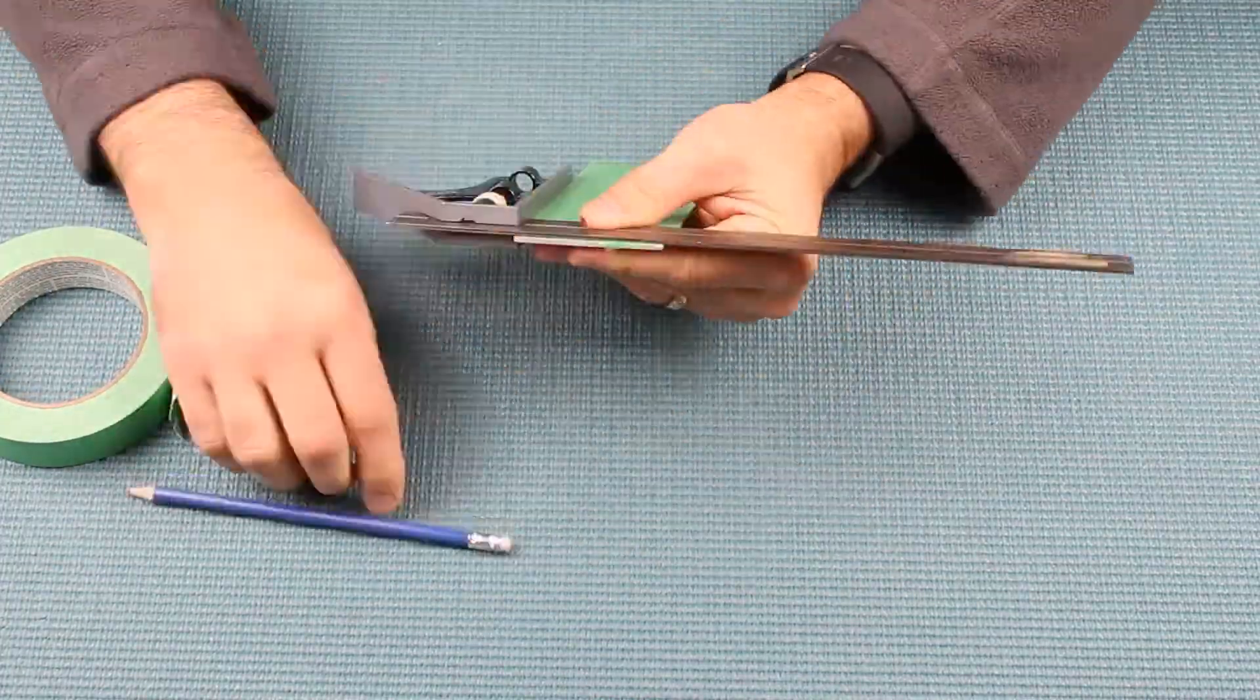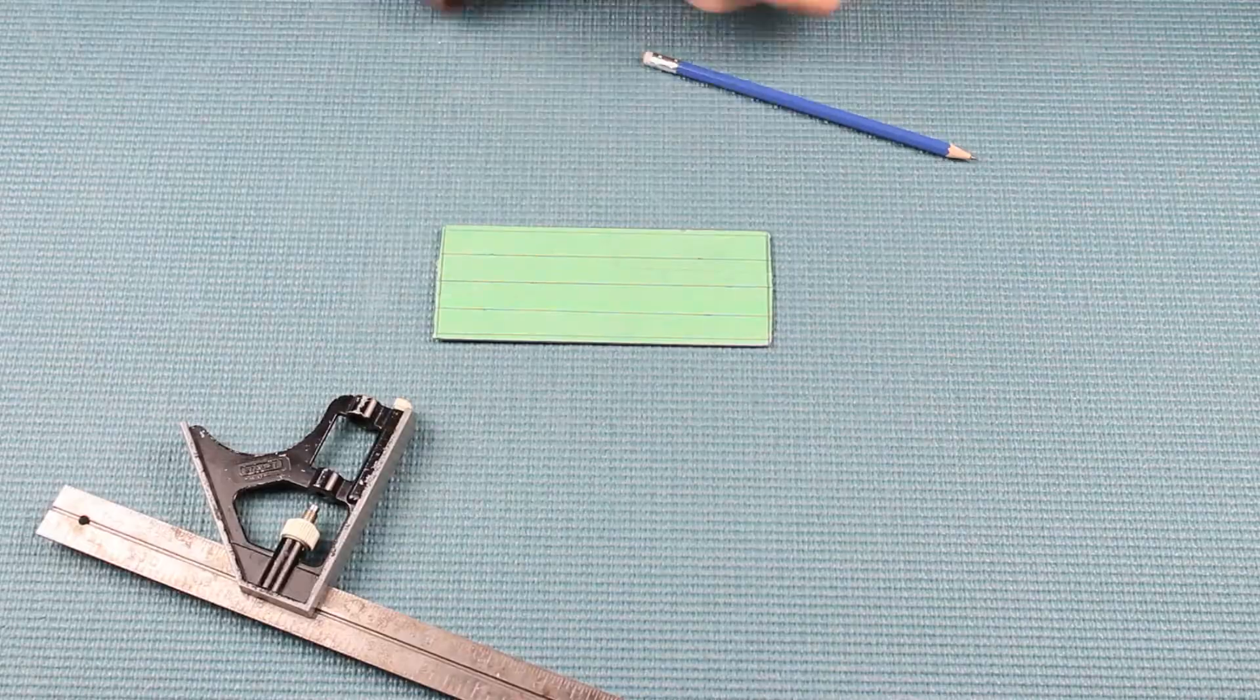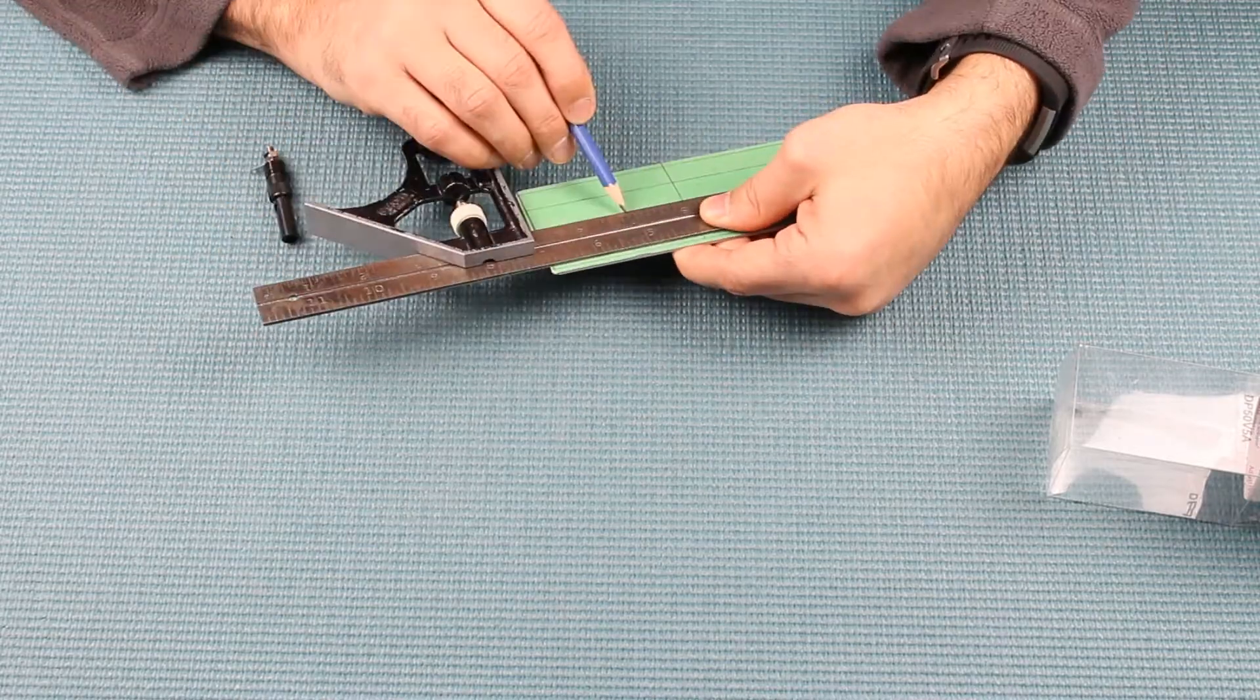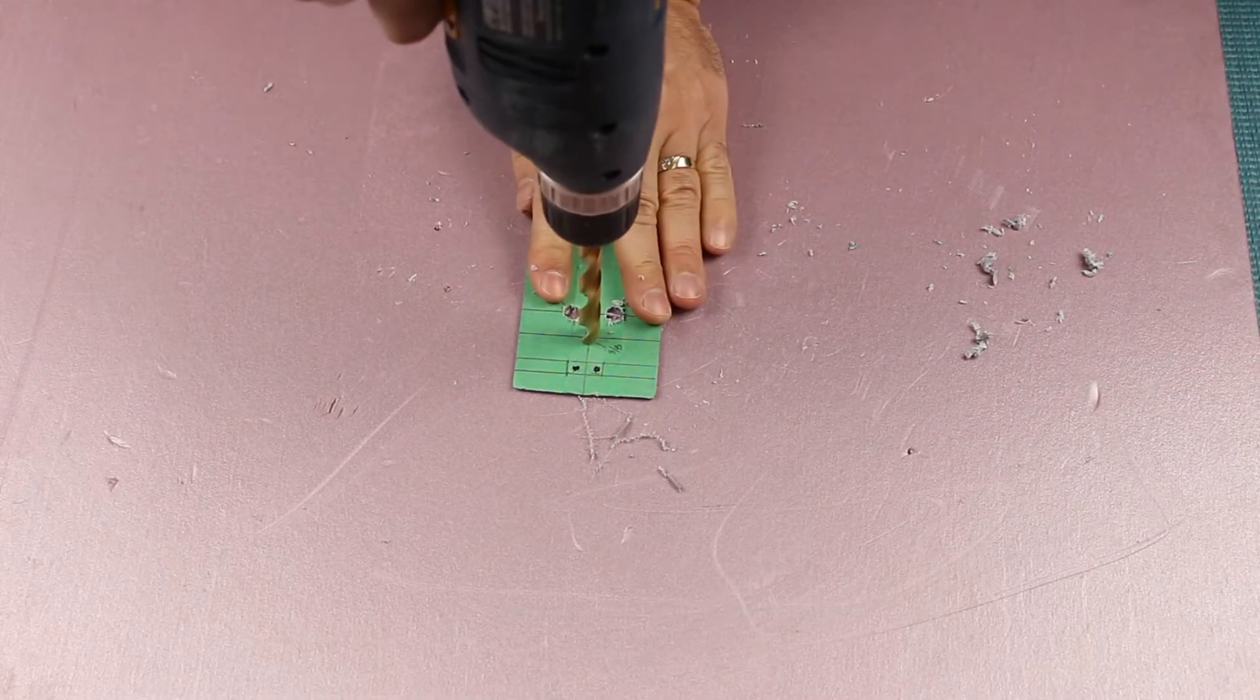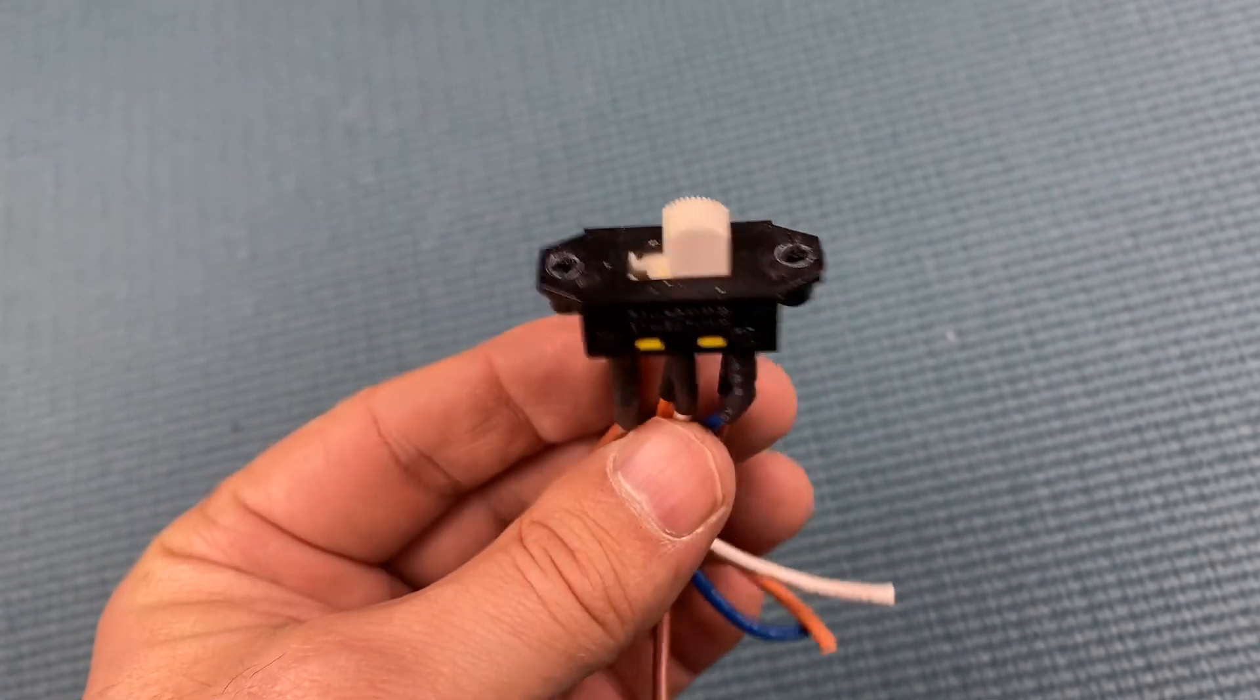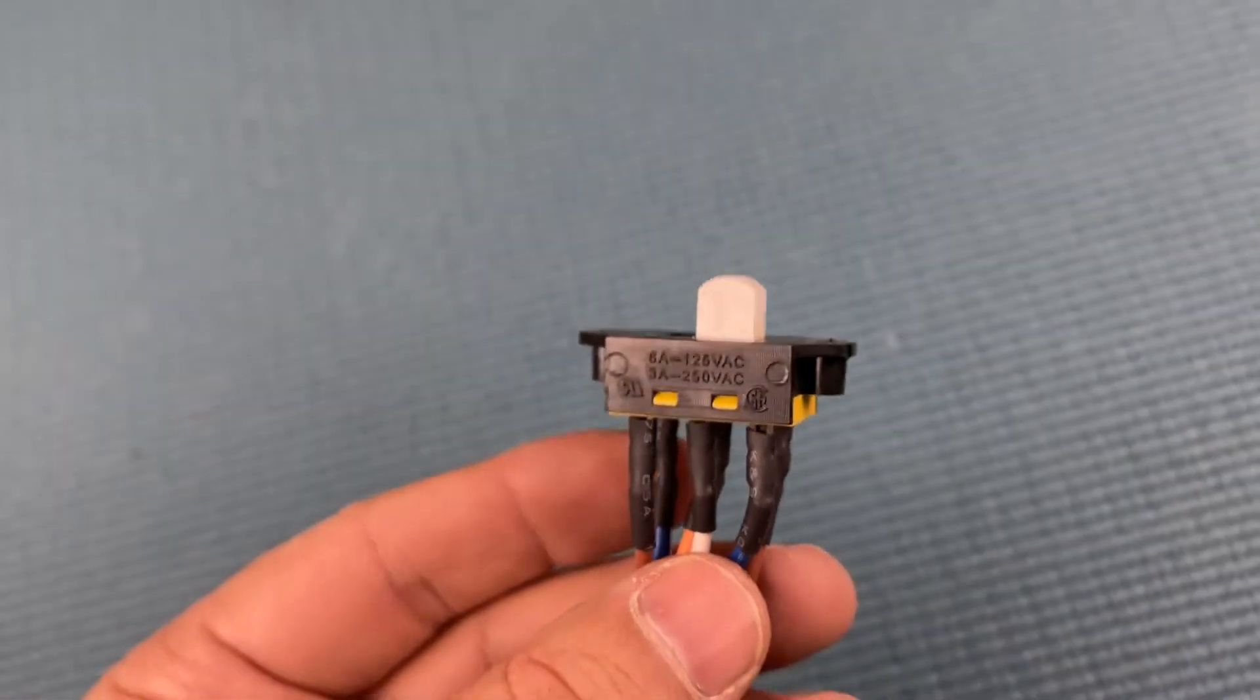I'm using masking tape so that I can mark the layout of the faceplate before drilling and cutting out the openings. I'll drill a hole for the power barrel connector next. I was going to buy an on-off switch, but in rummaging around, I thought I could use this slide switch from a discarded ceiling fan.